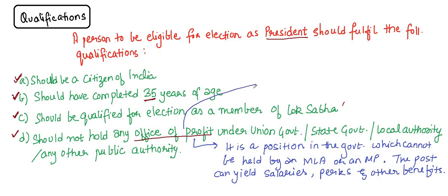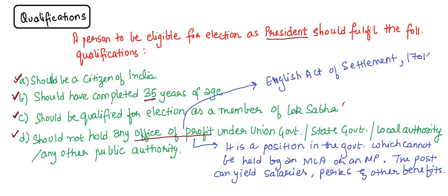The origin of this term 'office of profit' can be found in the English Act of Settlement in the year 1701. Under this law, no person who has an office or place of profit under the king, or receives a pension from the crown, shall be capable of serving as a member of the House of Commons. That means you cannot receive salaries and perks from two positions simultaneously.